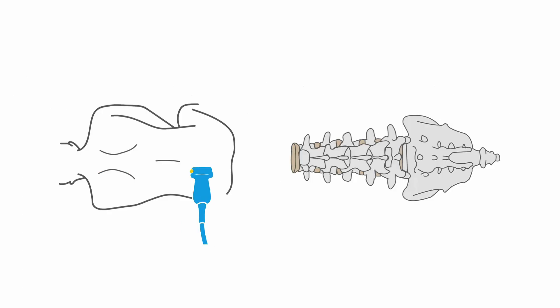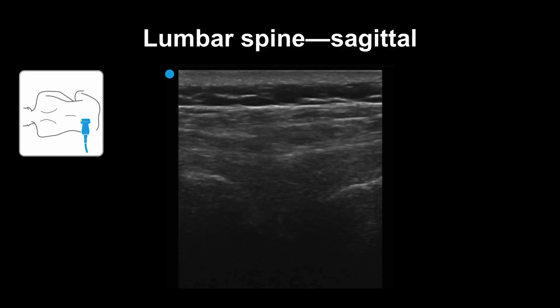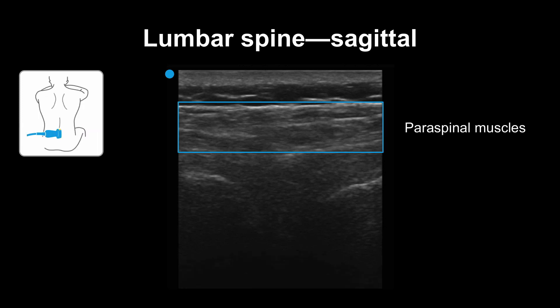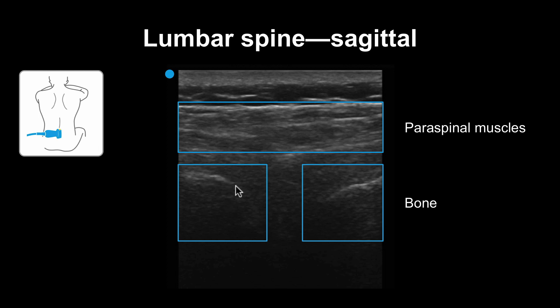Now let's take a look at the spine in the sagittal plane. This is a view of the sagittal lumbar spine with the hyperechoic spinal structures. You can see the paraspinal muscles, which appear striated or striped, and the hyperechoic bony structures with the corresponding shadowing down. You can see that this view looks the same whether the patient was lying down or sitting up.